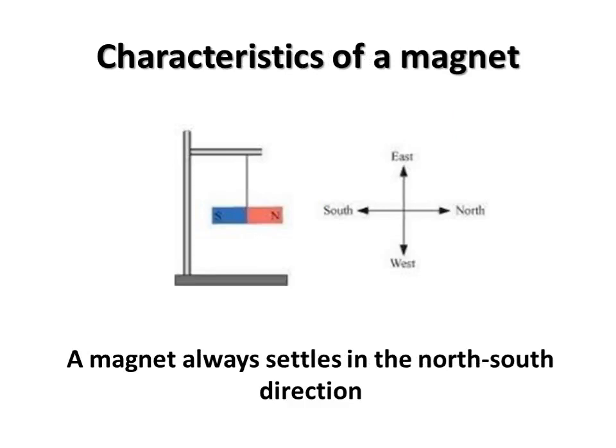Now let us learn some characteristics of a magnet. For this, let us try this experiment. Tie a thread to the center of a bar magnet and hang it from a stand. Note the direction in which the magnet settles, then turn it around again. Let it settle down and note the direction. Do this many times. What do you observe? You will find that a magnet always settles in the north-south direction.